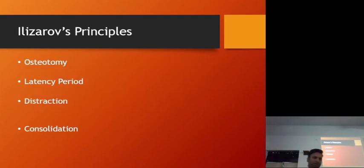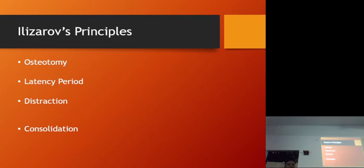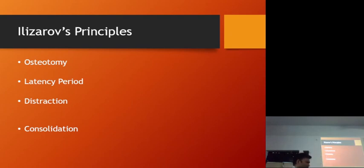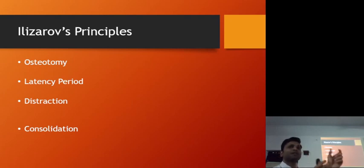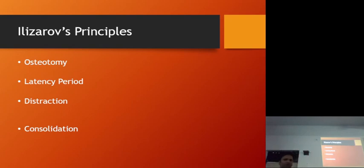To recap: Ilizarov's principles — osteotomy with minimal periosteal stripping; latency period of three, five, or seven days depending on blood supply and bone size; then distraction with rate and rhythm. At a faster rate we get thinning of the fibrous callus; at a slower rate we get early ossification of the fibrous callus. Rhythm is 0.5 mm twice a day or 0.25 mm four times a day. In BSSO with overlapping segments, we can increase the rate to 2 mm per day.